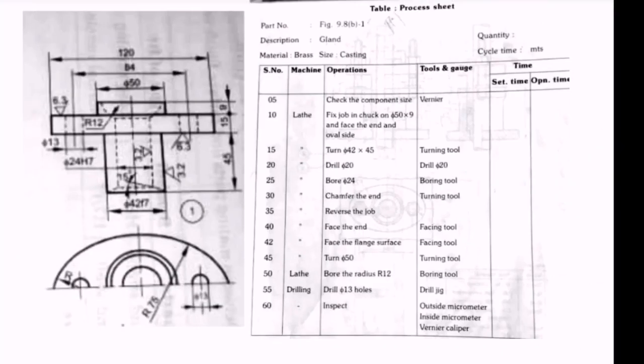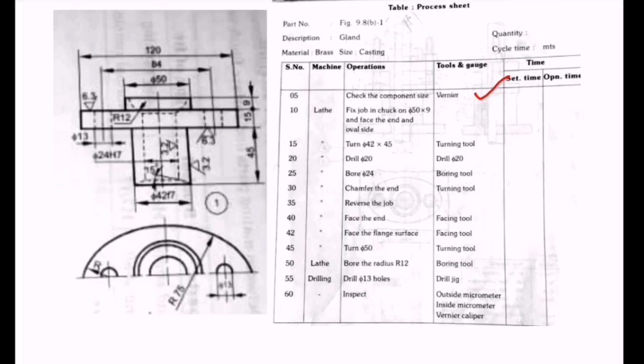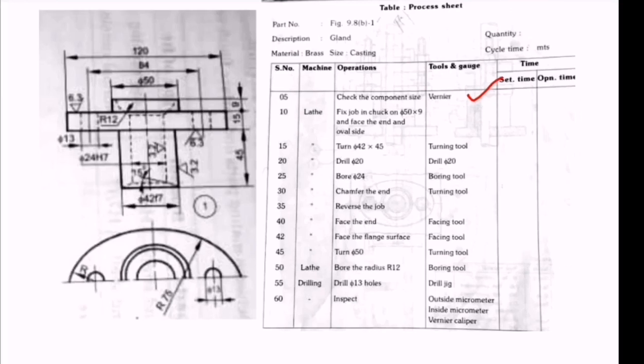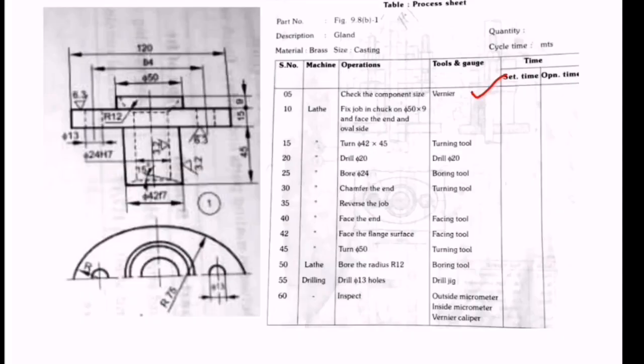Here is the process sheet. In the first operation, we check the component size with vernier calipers. To check component sizes, we need vernier calipers, screw gauges, and scales. For checking this gland size, we use vernier calipers.